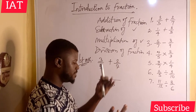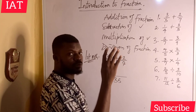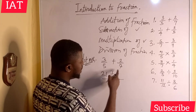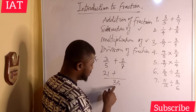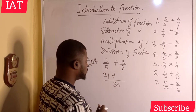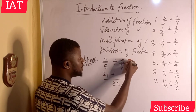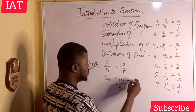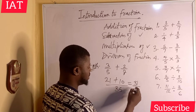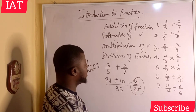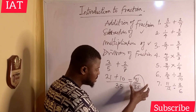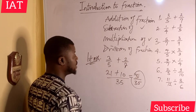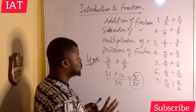Seven times three gives 21, and five times two gives 10. Finally, 21 plus 10 gives 31, and the answer is 31 over 35. This is a proper fraction because 35 can carry 31, and the numerator is lesser than the denominator. Now let me show you the quick method.